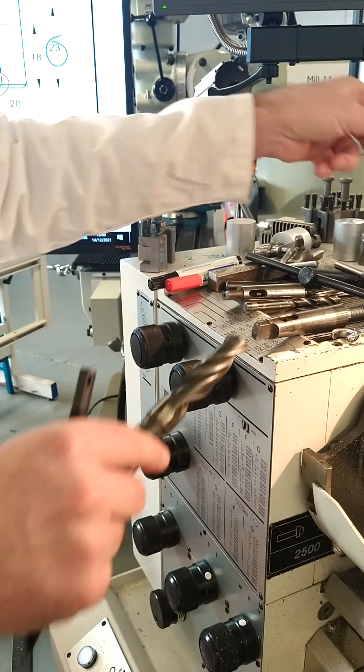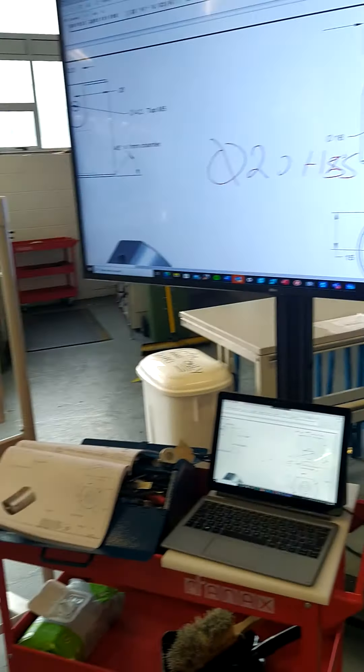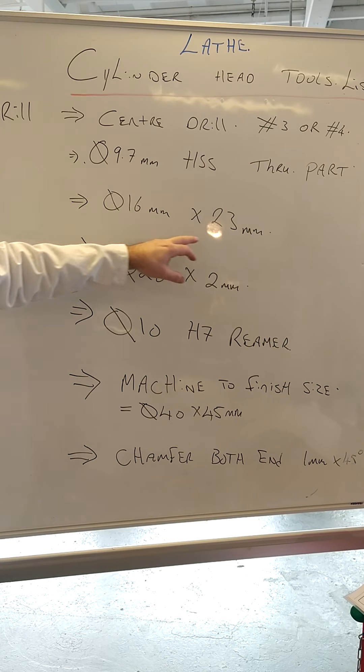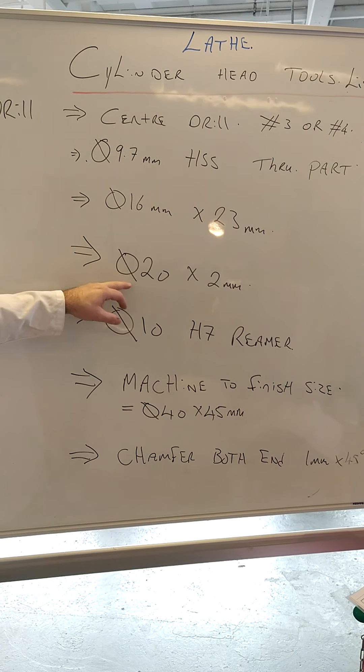So it sits in perfectly. So we'll start off, 9.7 straight through the part. A diameter of 16 to a depth of 23 millimeters. A diameter of 20, 2mm deep.